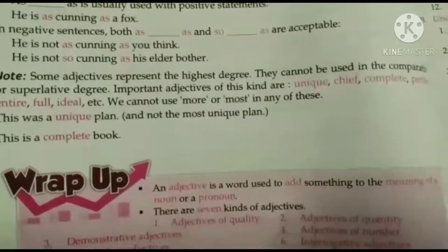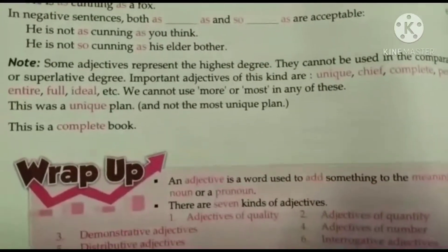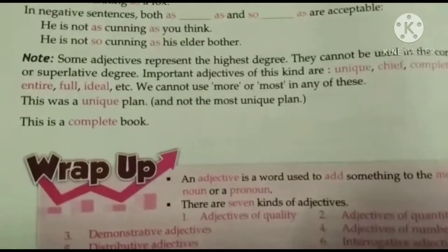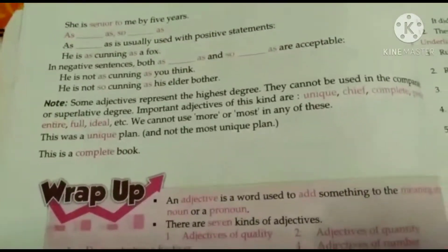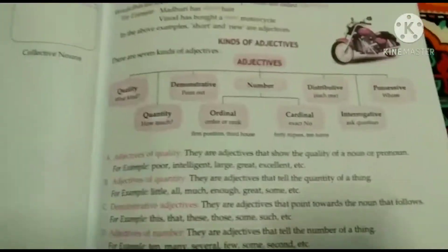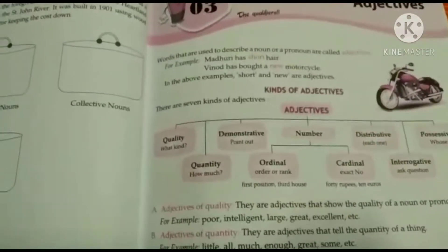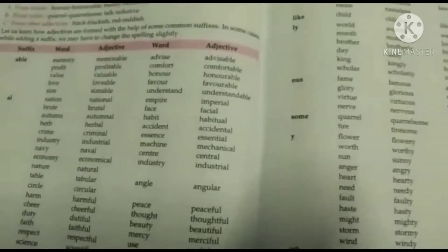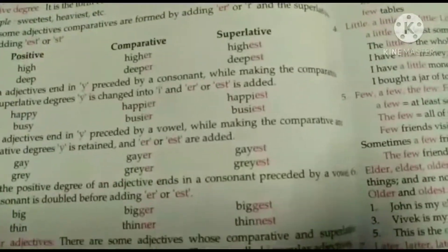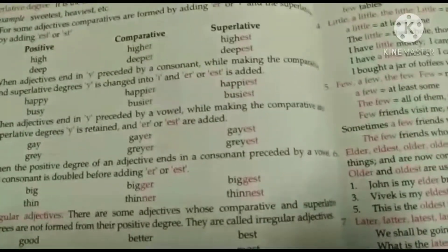Note: some adjectives represent the highest degree and cannot be used in comparative or superlative form. Important adjectives of this kind include: unique, chief, complete, prefer. For example, say 'this was a unique plan', not 'the most unique'. 'This is a complete book' is correct. Please write all the exercises — warm-up, exercise C1, D1 — in your copy and fill your book. If you have any doubt, ask me. Take care and complete your work on time. Thank you.